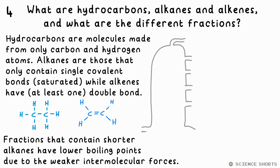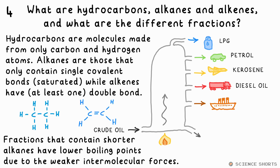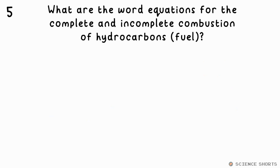Crude oil is a mixture of different length alkanes. This is heated at the bottom of the fractionating column, vaporised into gas, and they rise up the column. They then recondense back into liquid at different heights due to the fact that it gets colder up the column. Shorter chains like LPG or refinery gases end up coming out of the top, because shorter chains have lower boiling points due to the weaker intermolecular forces between them.